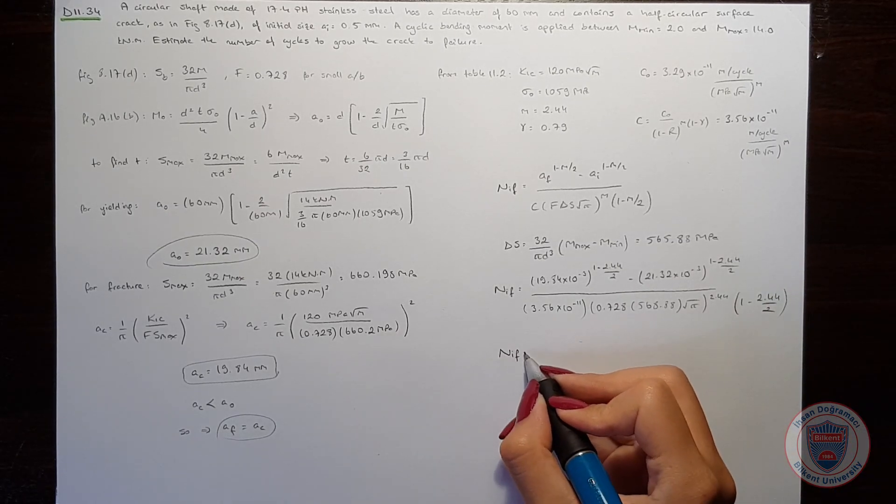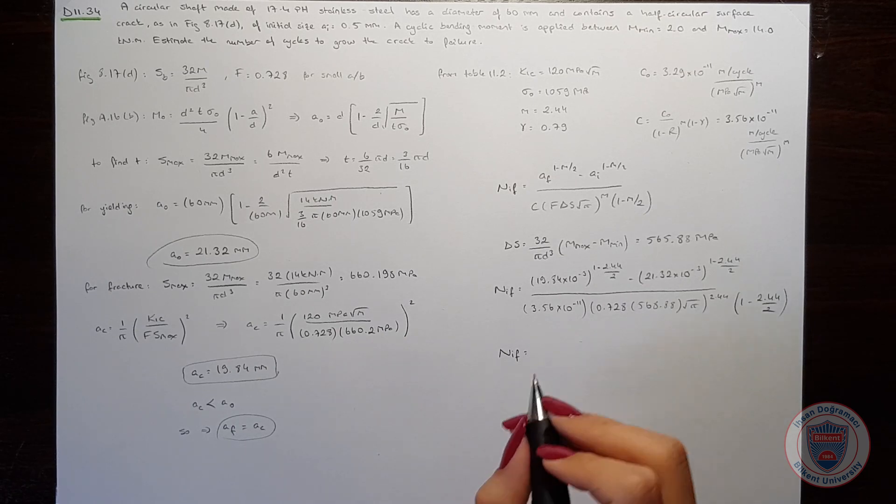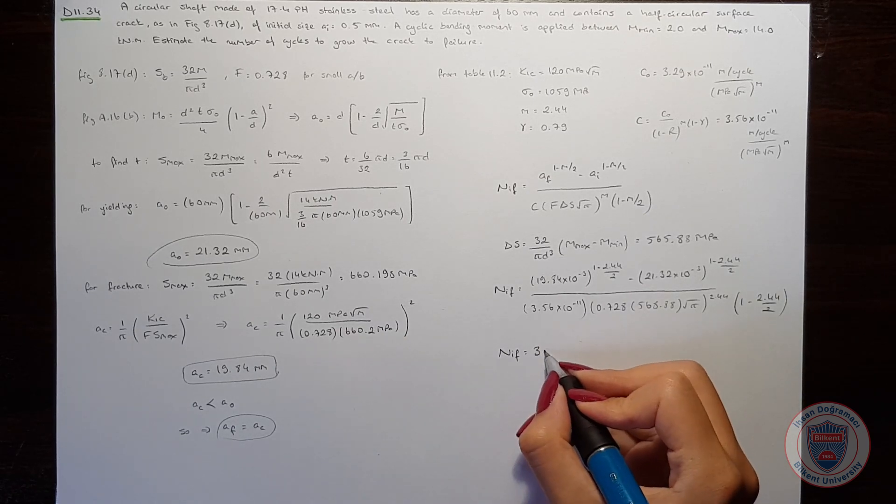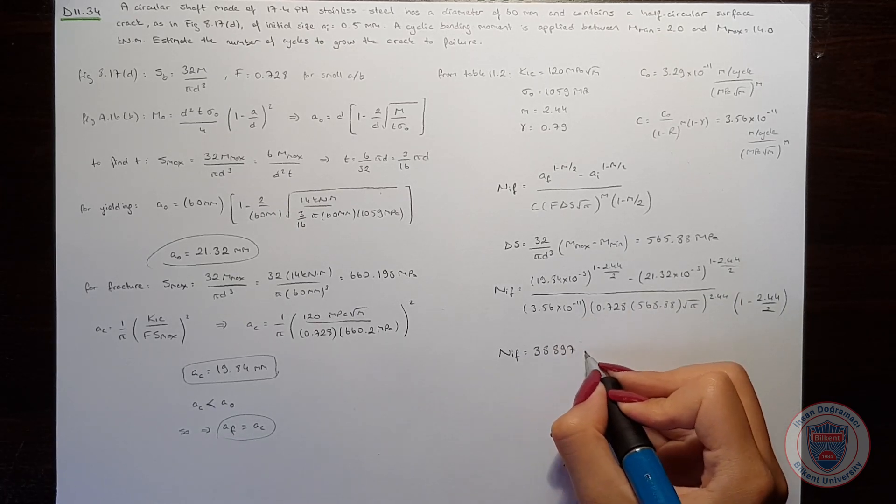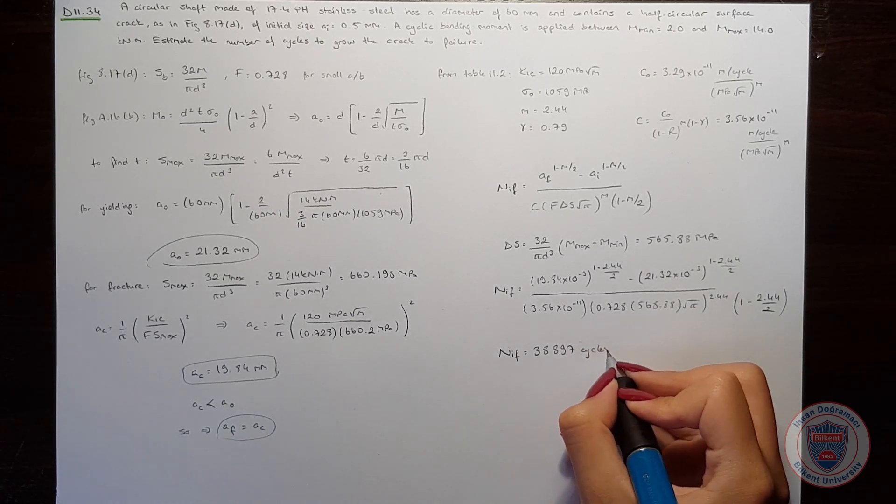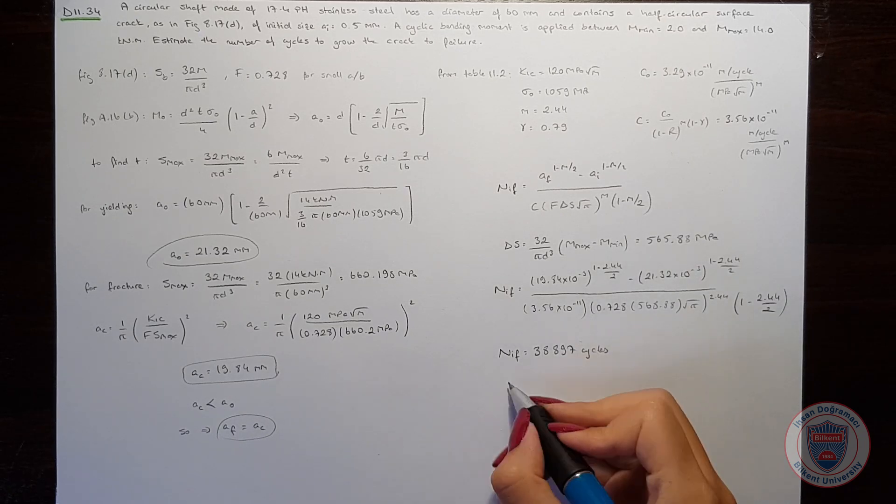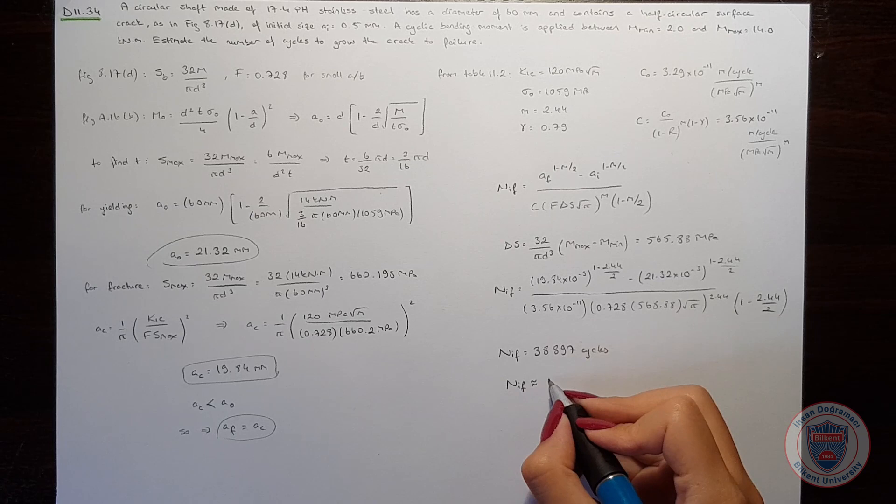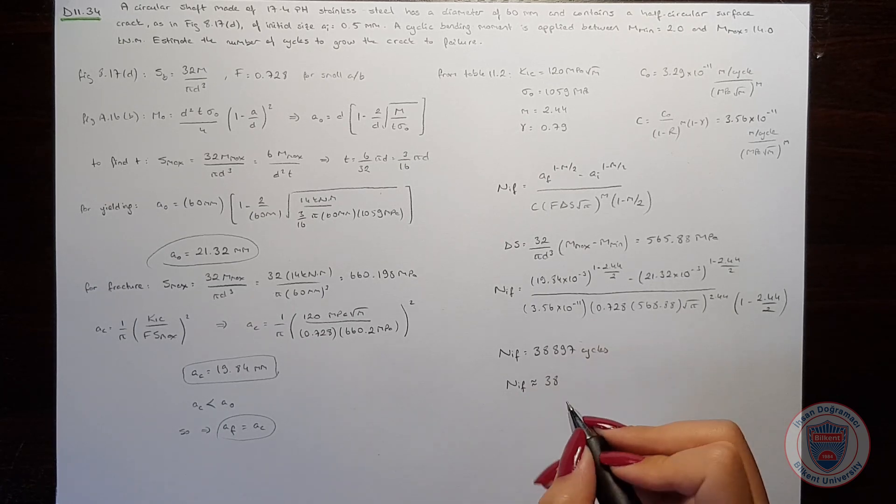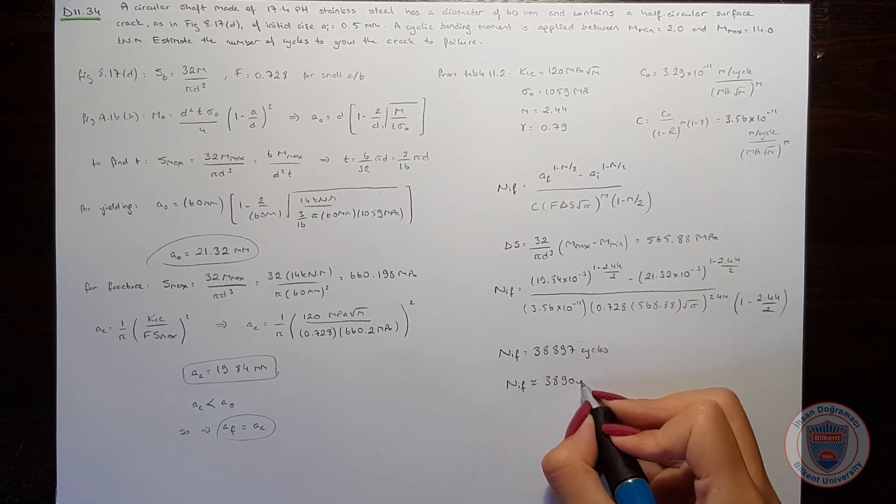And the number of cycles will be 38,897. And we can say that it is approximately 38,900 cycles.